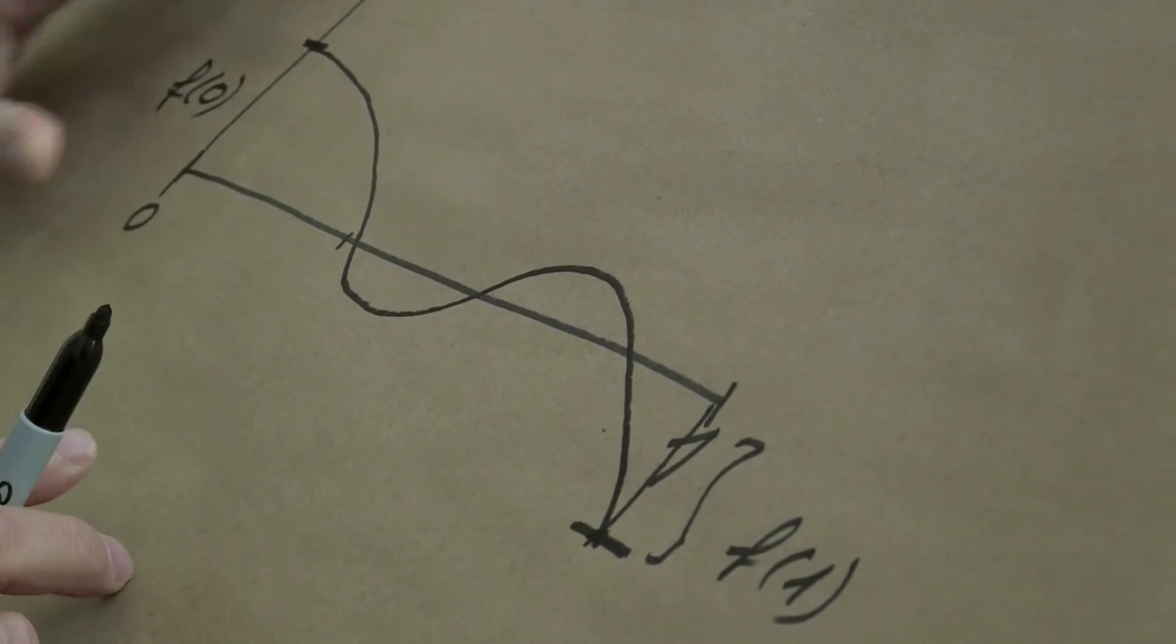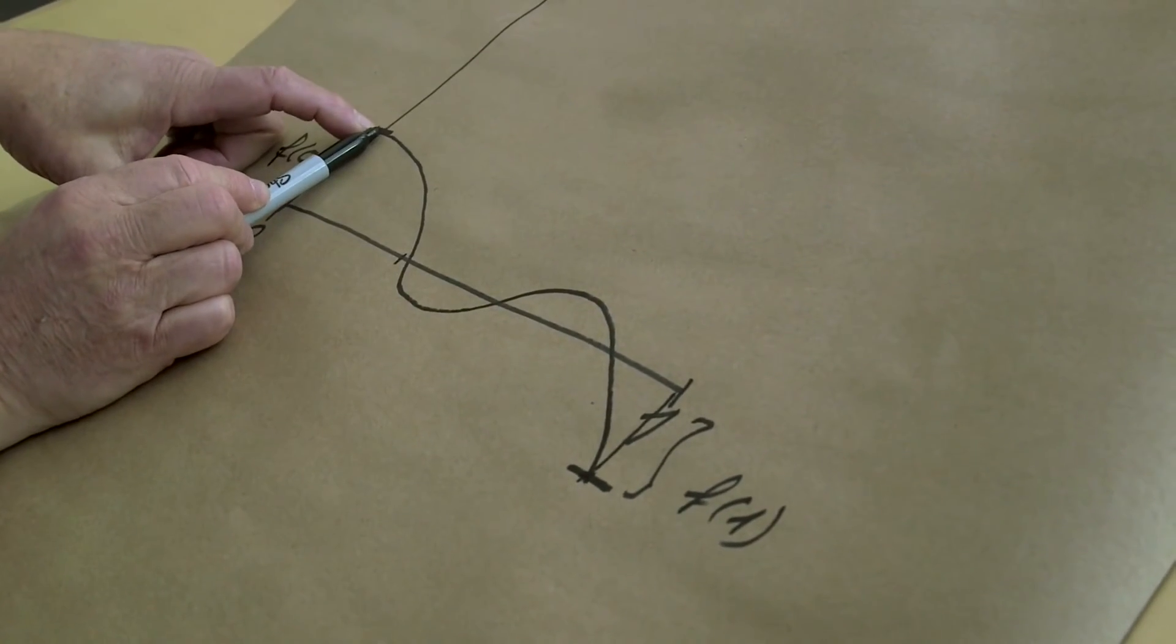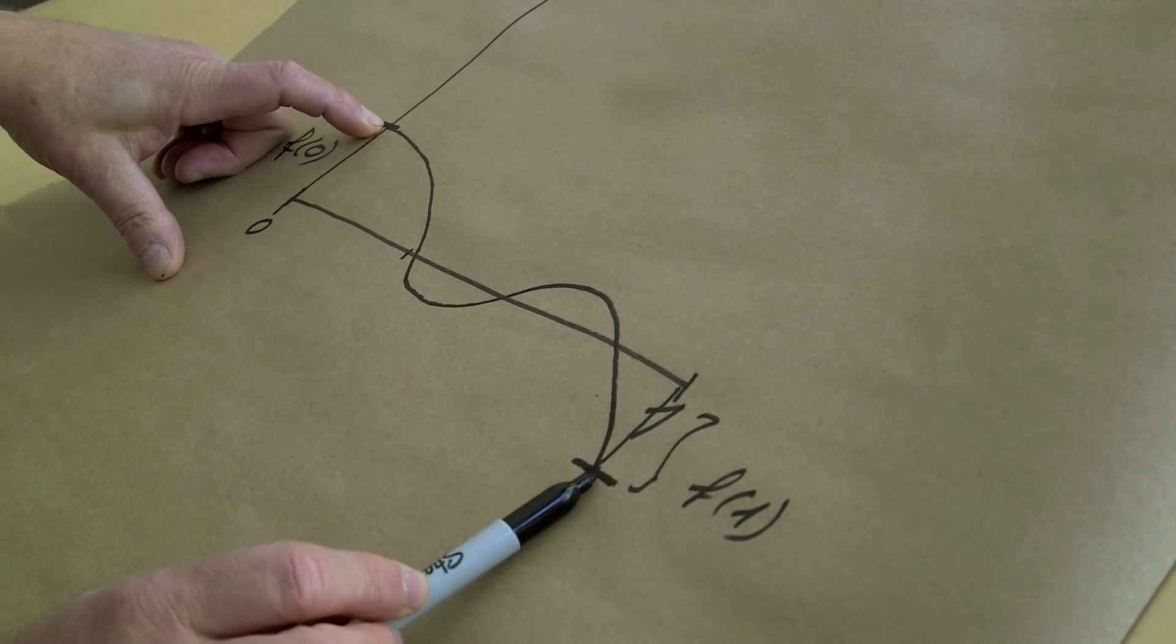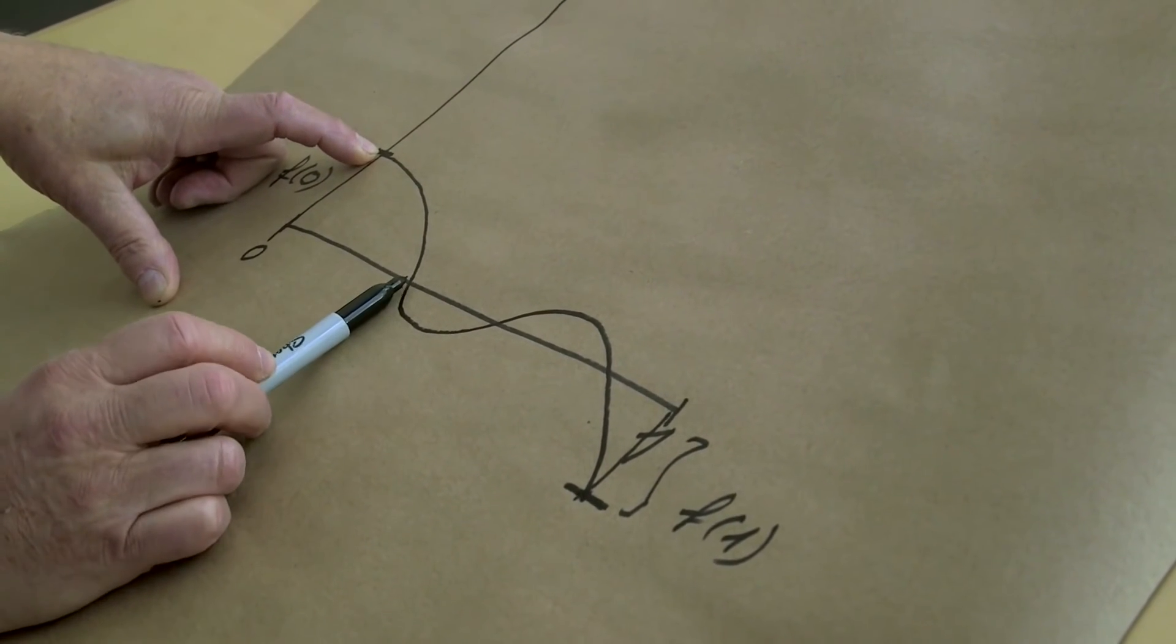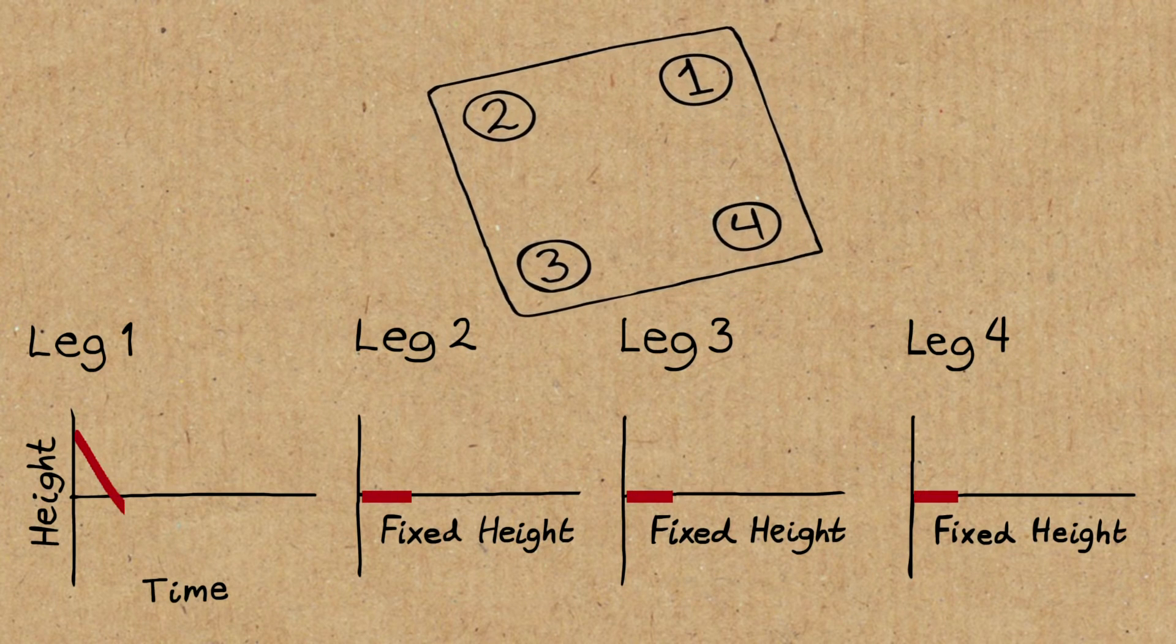And now comes the famous theorem of mathematics, the mean value theorem, which just says that if you have a continuous function, which is positive here and negative here, there must be a position where it is zero. It could be multiple, but it could be, you can have fun with it.